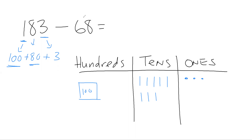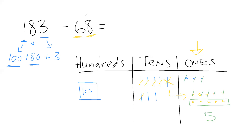Now let's take 68 and cross it out. We need to cross out eight ones, but there aren't eight here. I can decompose — take a 10, cross it out, and make it 10 ones: 1 through 10. Now take eight away: 1, 2, 3, 4, 5, 6, 7, 8. That leaves 1, 2, 3, 4, 5. Now cross out six tens: 1, 2, 3, 4, 5, 6. That leaves one ten. On the hundreds place, there's nothing to take away — I just count it. I have one 100. So my answer is 115.